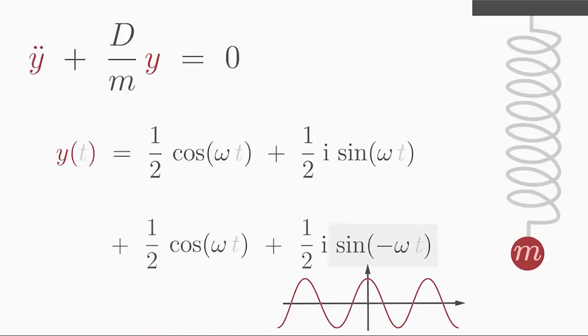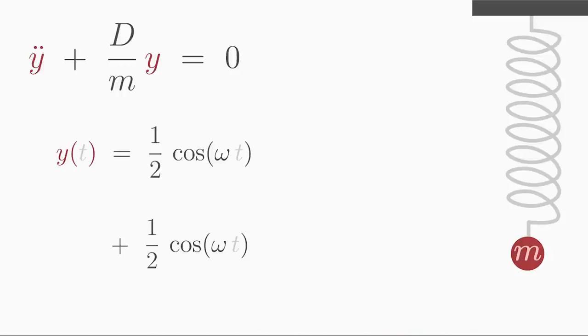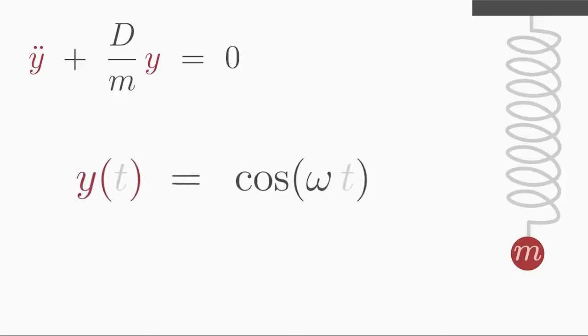The sine function, on the other hand, is anti-symmetric. Therefore, we cannot omit the minus sign in the argument, but rather pull it out in front of the sine function. Very nice. The complex sine function drops out. And the cosine can be summed up. And this is our final solution.